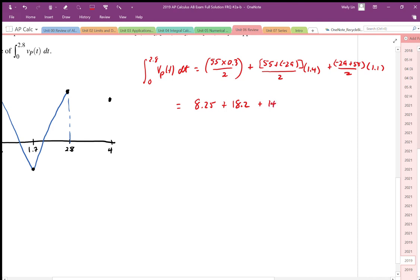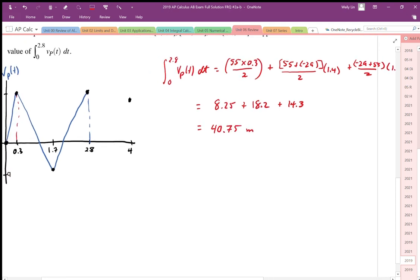Same with the next interval. Part of it's below and part of it's above. So we end up with 14.3 as a net change. Adding those up, we get 40.75 meters as the area under that curve.